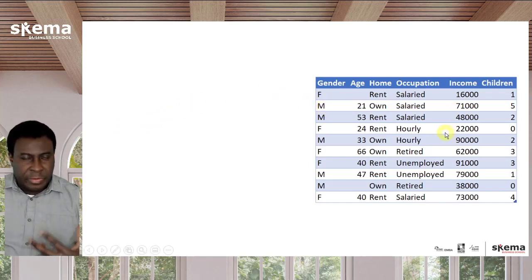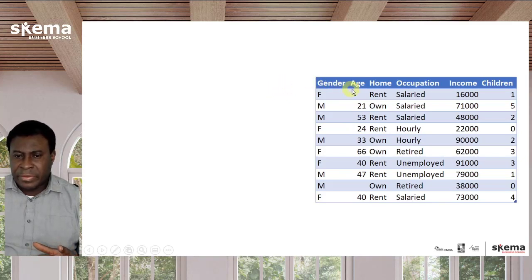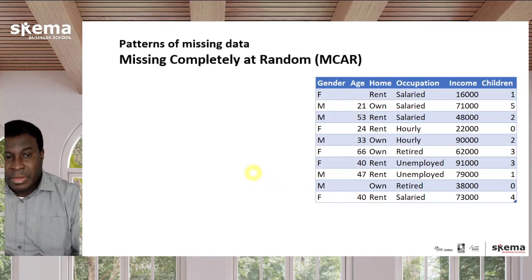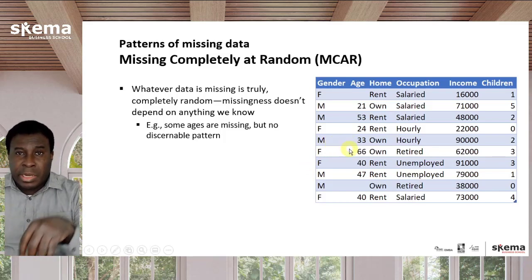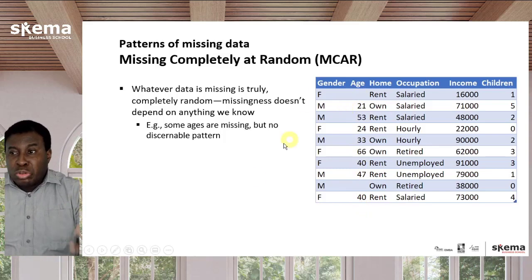We're going to use an artificial dataset with a few columns, focusing on the age column to see different issues with missing values. Pause the video for a moment and try to figure out if you can see any pattern to the missing values in the age column. I didn't find any pattern either — this is missing completely at random (MCAR). The data that is missing is truly completely random; I ran a random number generator to pick which values to remove. There's just no pattern.